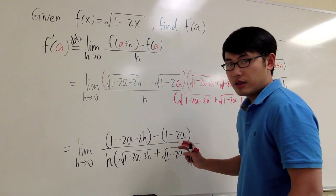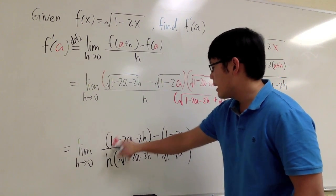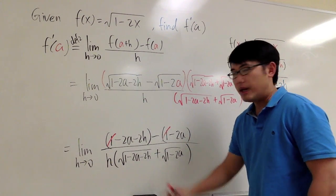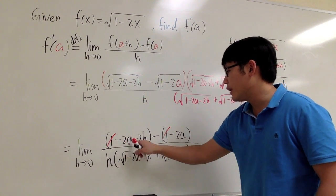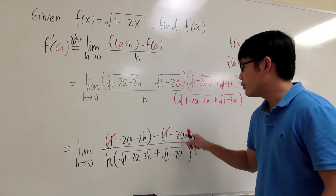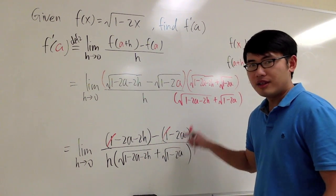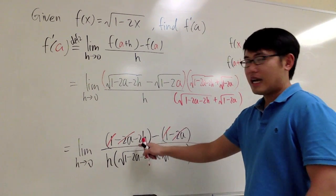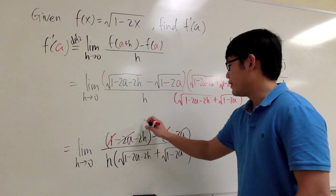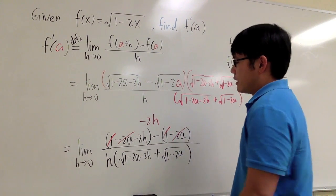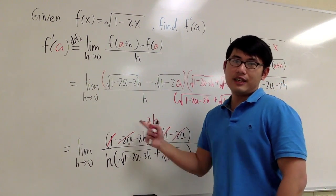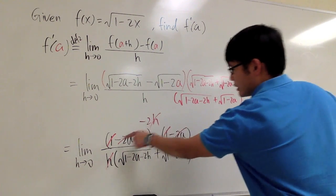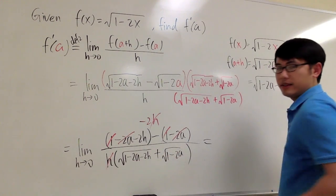Looking at the numerator: we see 1 minus 1, so they cancel. We also have negative 2a minus negative 2a, so those cancel as well. We are left with just negative 2h in the numerator. This h and the h in the denominator cancel each other out. Very nice — we are ready.